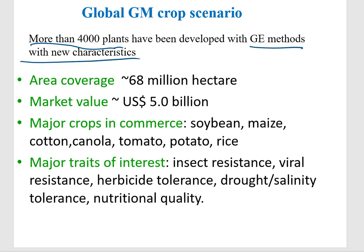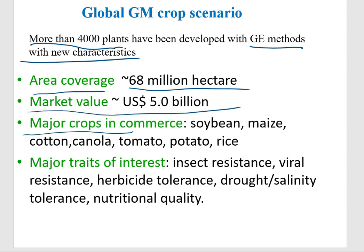If we estimate, more than 4,000 plants have been developed through genetic engineering methods or molecular technology aided by biotechnology. The area covered is 68 million hectares where modification was done and crops were developed. The market value is 5 billion dollars. Crops helped include soybean, maize, cotton, canola, tomato, potato, and rice — all given biotechnological perspectives.